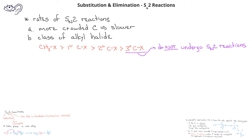As we've already explained, iodide is a better leaving group than the other halogens. So the rate of SN2 reactions will be such that alkyl iodides react much faster than alkyl bromides, which are faster than alkyl chlorides, which will react more quickly than alkyl fluorides.